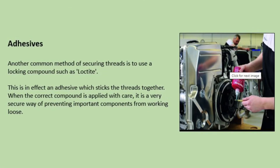Adhesives. Another common method of securing threads is to use a locking compound such as Loctite. This is in fact an adhesive which sticks the threads together. When the correct component is applied with care it is a very secure way of preventing important components from working loose.